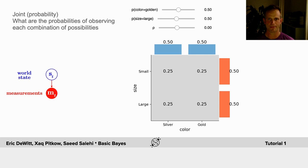You're going to play with these joint probabilities and discover how, if you relate the two qualities, the color and the size, through correlation.